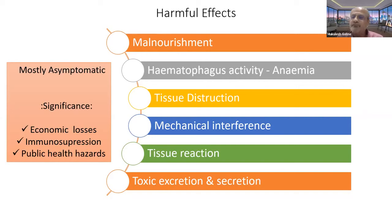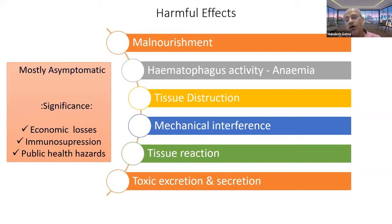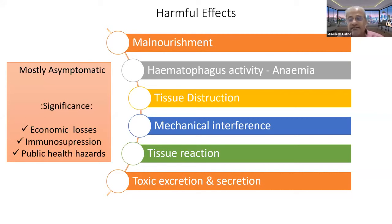Even though all these events are taking place in the body of infected animals, around 90% of animals are asymptomatic. Only 5 to 10% show signs of anemia, bottle jaw, diarrhea, or anorexia. Even the veterinarian wouldn't know that the animals are infected with different types of worms.